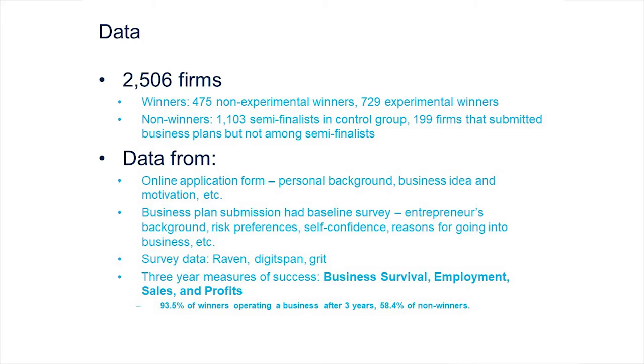The competition grew massively — 65,000 applications the next year, then 124,000. The process worked as follows: 24,000 applied online, the top 6,000 based on a quick crude scoring were invited to attend business plan training, then they submitted more detailed business plans which were scored by judges.